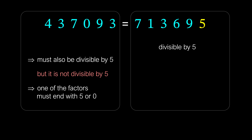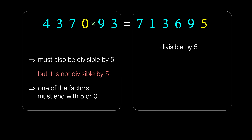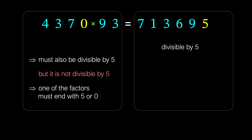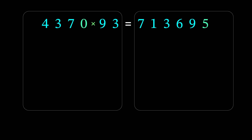However, there is no 5 on the left side at all and there is only one 0. Therefore, we must put a multiplication sign after 0. Thus, we have restored one multiplication sign and proved that the multiplication sign must indeed be placed here.